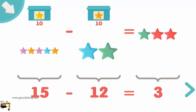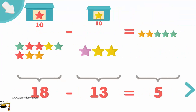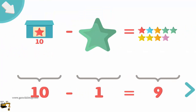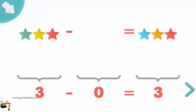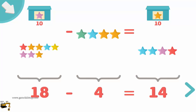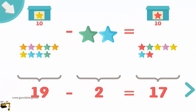15 minus 12 equals 3. 17 minus 3 equals 3. 18 minus 13 equals 5. 10 minus 10 equals 0. 12 minus 2 equals 3. 3 minus 0 equals 3. 18 minus 4 equals 10. 19 minus 2 equals 17.